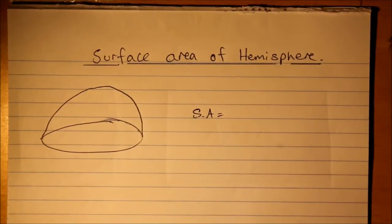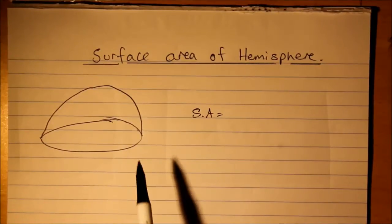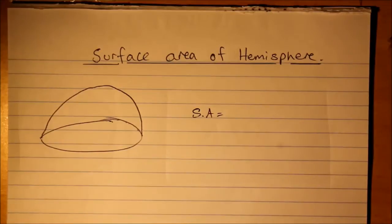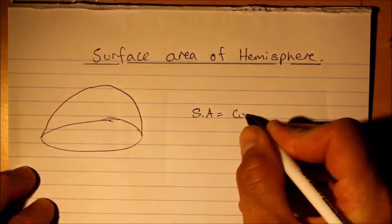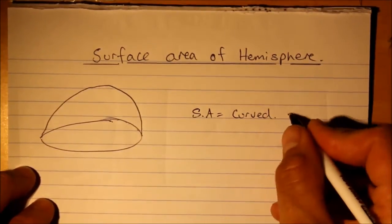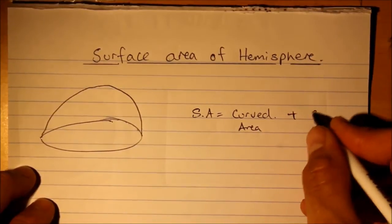Okay, let's take a look at the surface area of a hemisphere. Now, what it isn't, it's just not half the surface area of a sphere, because what you have is the curved part, curved area, plus the circle.